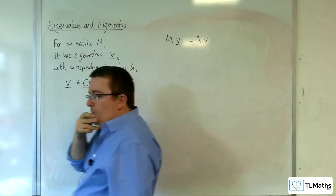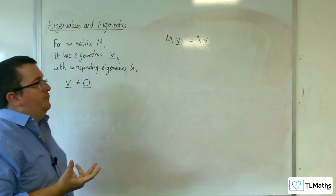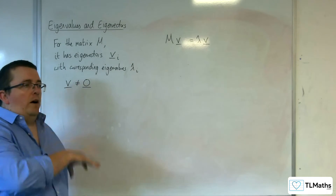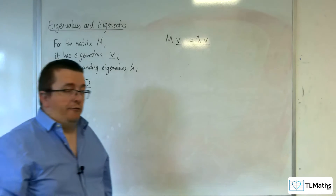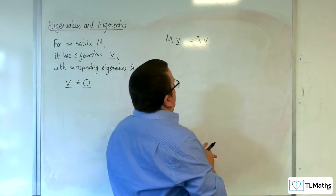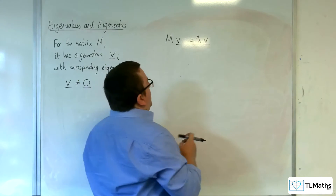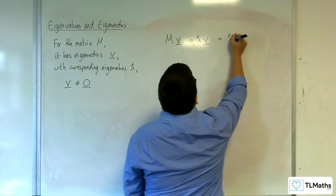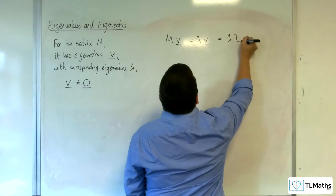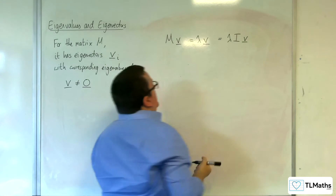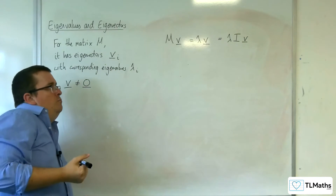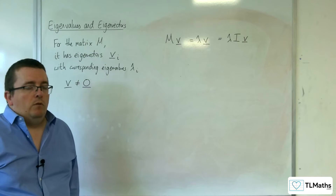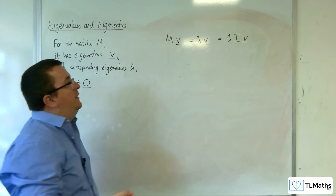With that in mind, I'd like to rearrange that into another form. I'm going to first recognise that lambda times V is the same as lambda times the identity matrix times V. You might not be too happy with that initially, so I'll give you an example.